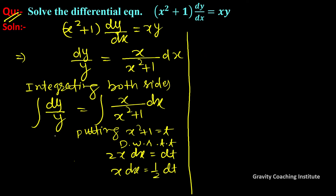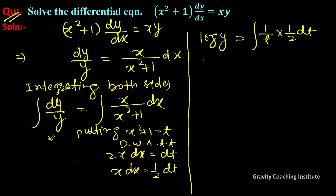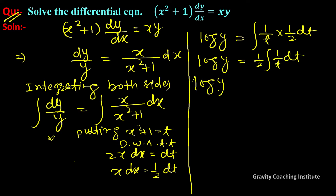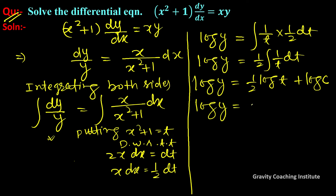So log y = integration of 1/t · (½ dt) = ½ log t + log c. Therefore log y = log t^(1/2) + log c, which gives log y = log(c · t^(1/2)).